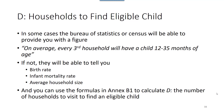If they can't tell you that, then they will probably be able to tell you these other three quantities: birth rate, infant mortality rate, and the average household size. There is a formula in Annex B1 that you can use to calculate D from those three inputs.